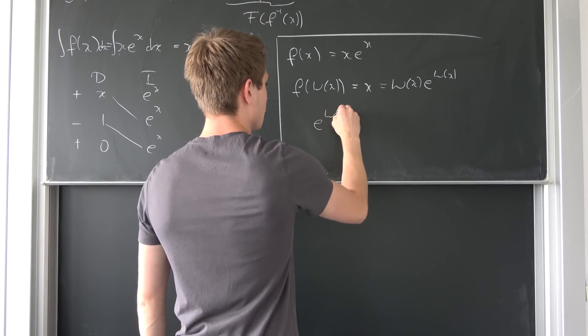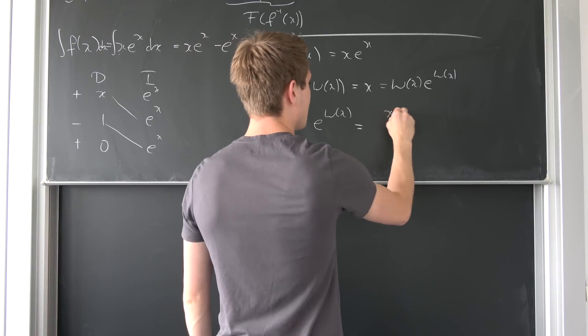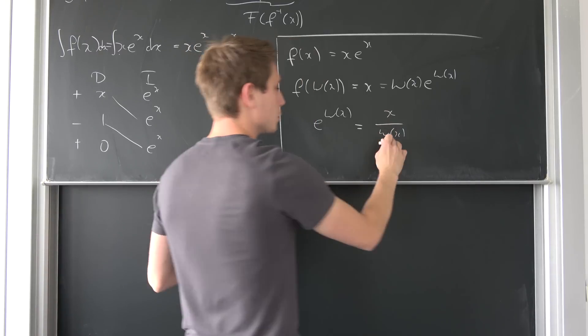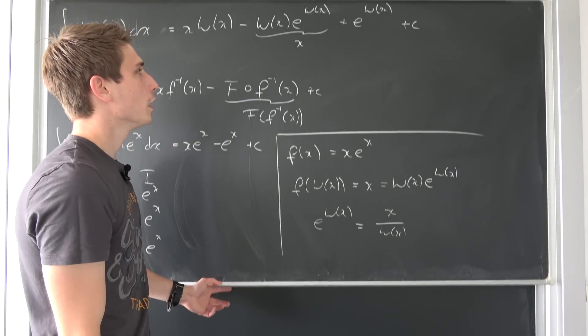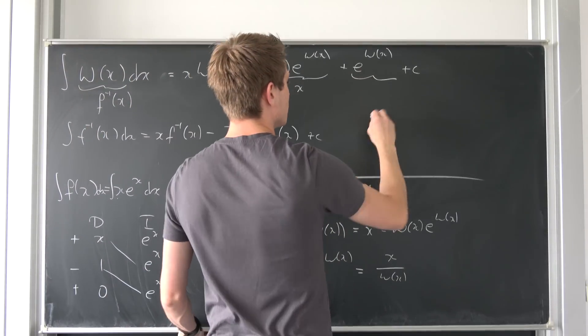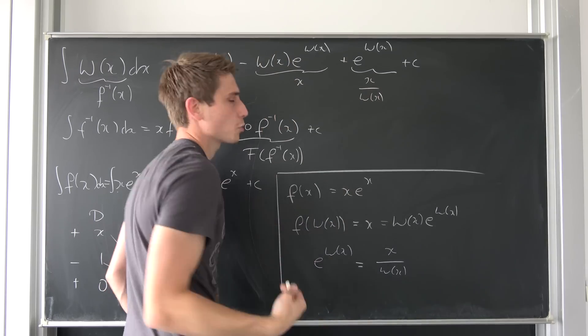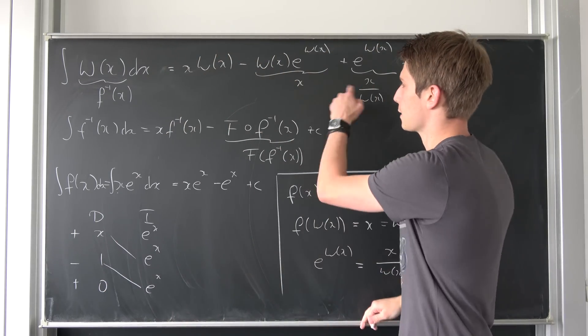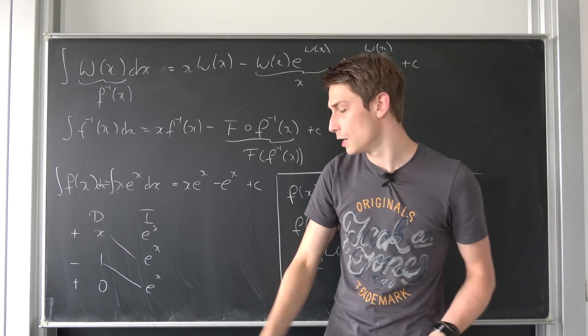So e to the Lambert of x is nothing but x over Lambert of x. We don't want this thing to be equal to 0. This is just x over Lambert of x, and what you can do now, you can factor out this x on all of those terms and then you are done.